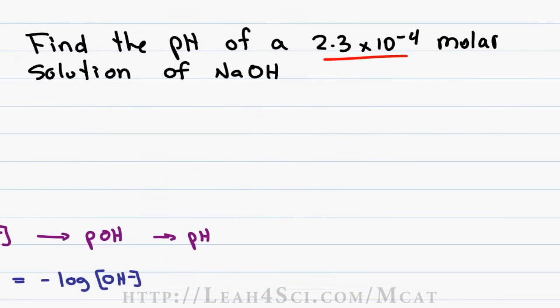So let's go back to our initial example, we're trying to solve 2.3 times 10 to the minus 4. First we want to find the range and the range will be, this is my lowest number because I round 2.3 down to 1, 1 times 10 to the minus 4 is 4. Rounding it up to 10, 2.3 becomes 10 times 10 to the minus 4 or 1 times 10 to the minus 3 giving me 3. So we know the pOH is going to be between 3 and 4.